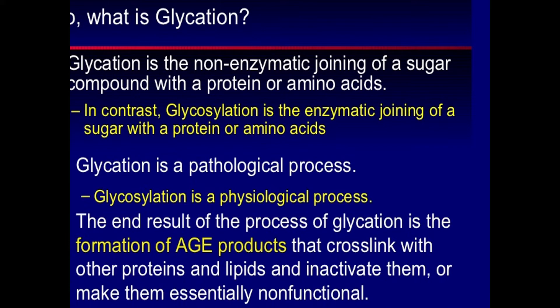These advanced AGE products cross-link with proteins and inactivate them. Proteins are present everywhere — in every enzyme, on basement membranes. These advanced glycation end products cross-react with proteins and lipids, making them essentially non-functional. When these AGEs are present due to excessive glucose in your body, there are multiple ways through which they react with different things.